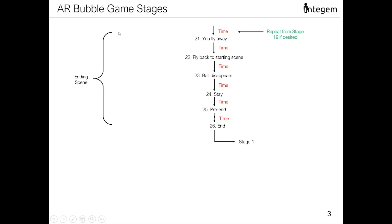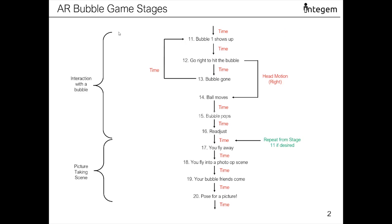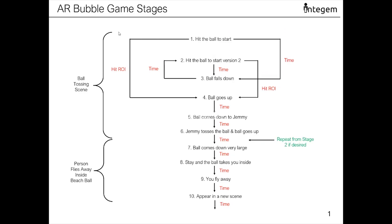Now let's go through the stages and transitions so we can understand the architecture of this game. In the first stage, the user can hit the ball to start playing the game. If some time passes and the user does not hit the ball, then we transition them to stage 3, where the ball falls down. After some time, we can give the user another chance to hit the ball.